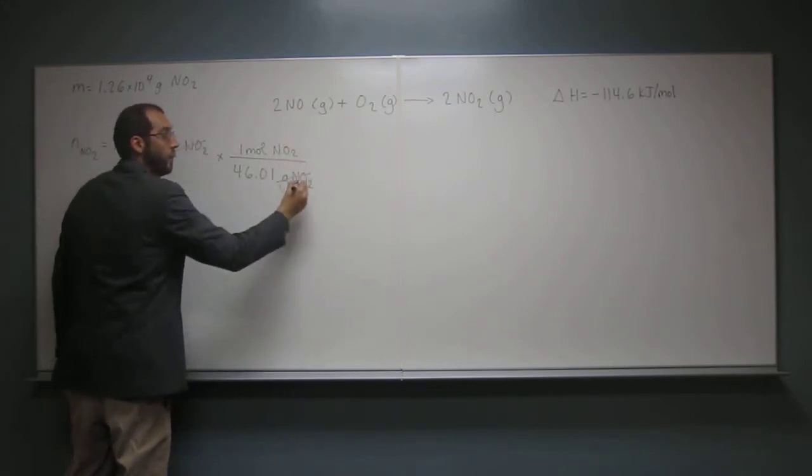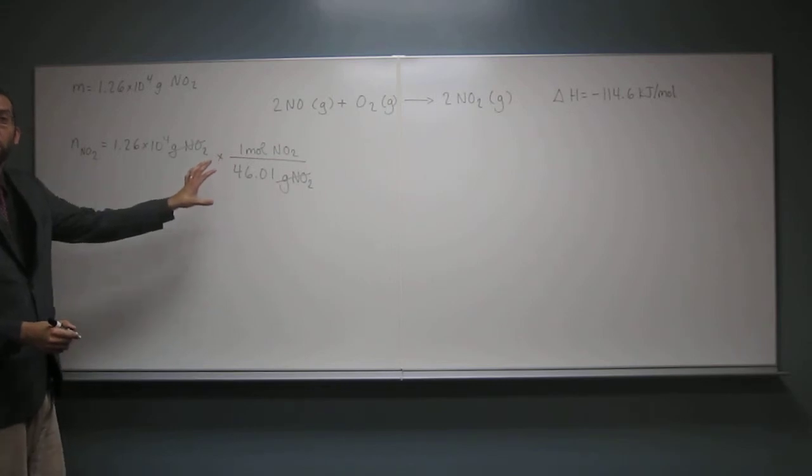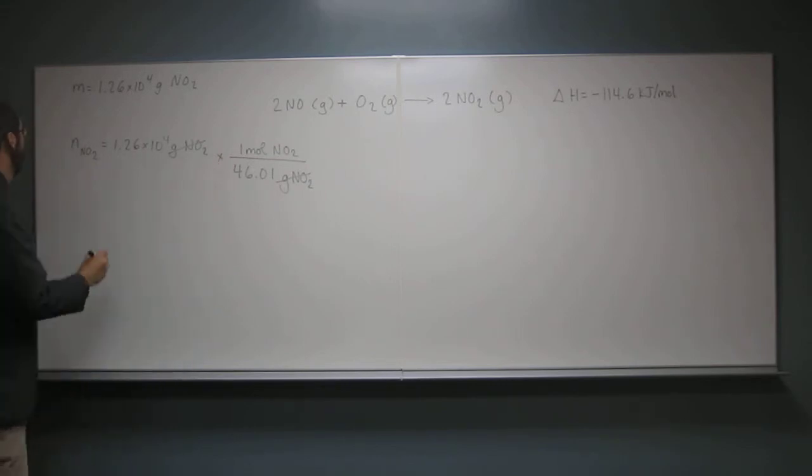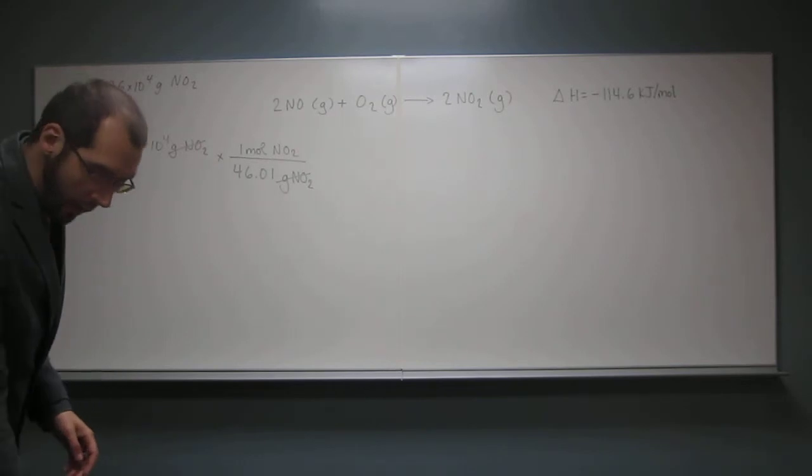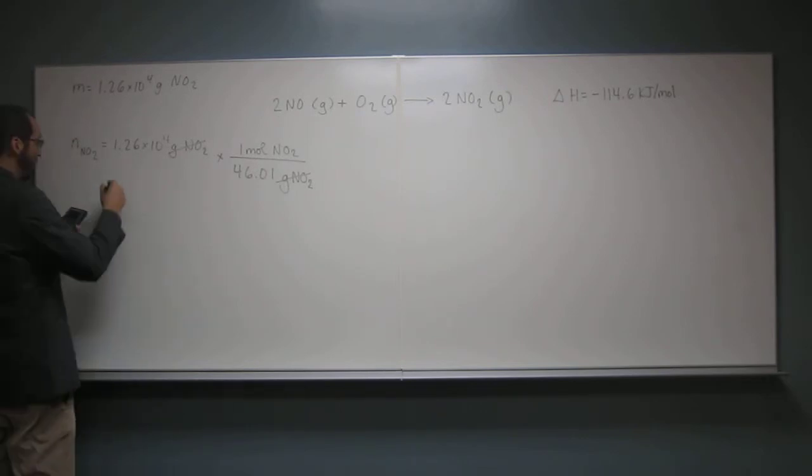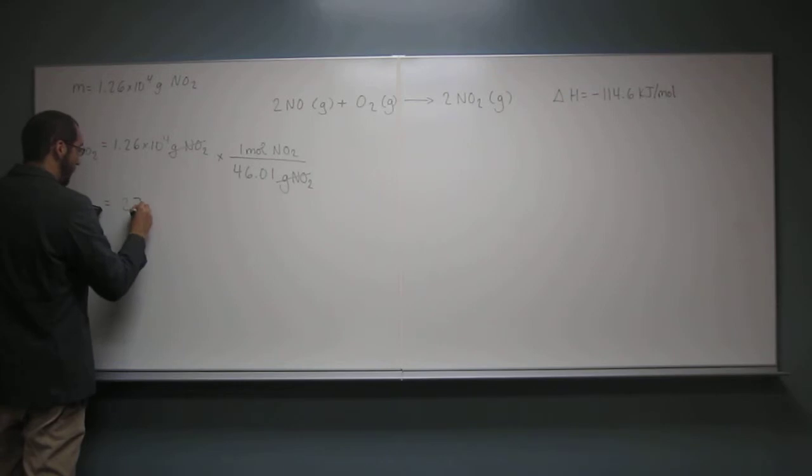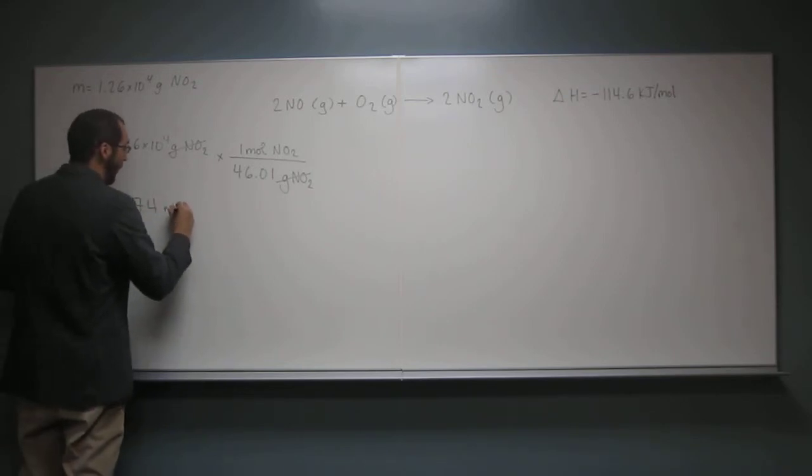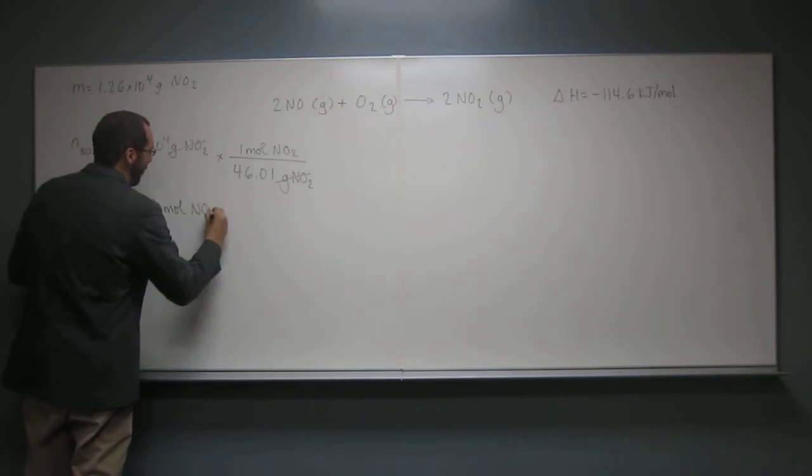So then we cancel those out. That will give us the number of moles of NO2 that we've got, right? So let's do that together. So 1.26 to the fourth divided by 46.01. And I'm just going to keep this at 3 sig figs of 274 moles. That's a lot. Yeah.